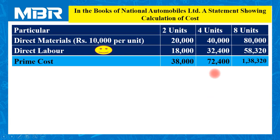Prime cost: as no other direct expenses are given, only two items are included — direct materials and direct labor. Prime cost for 2 units is rupees 38,000; for 4 units it is 72,400; and for 8 units it is 1,38,320.